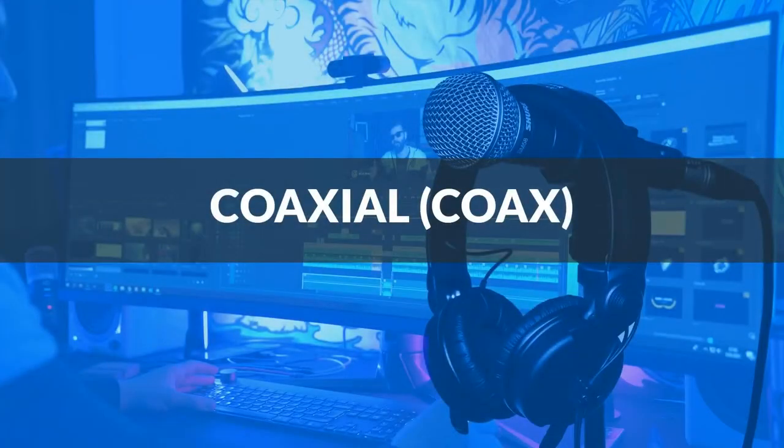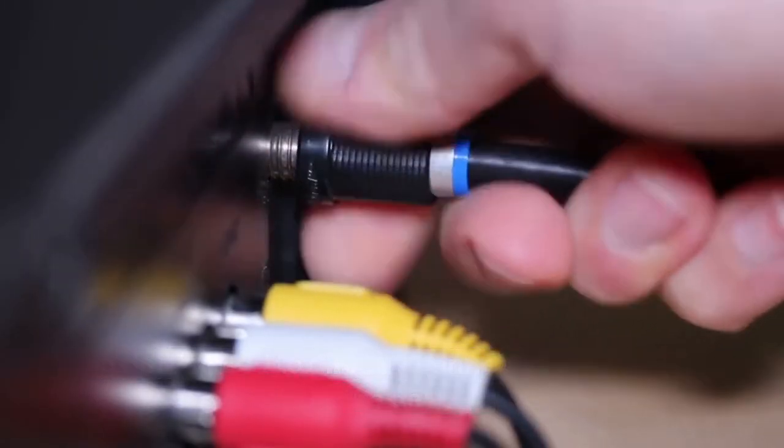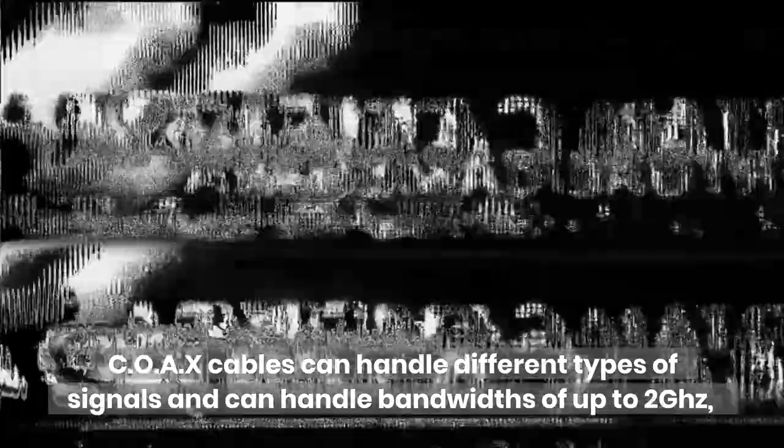Coaxial COAX. Previously used to directly connect your television to the aerial, coaxial cables have been around for decades and are still used today. COAX cables can handle different types of signals and can handle bandwidths of up to 2 GHz. This enables them to remain on par with modern technology.